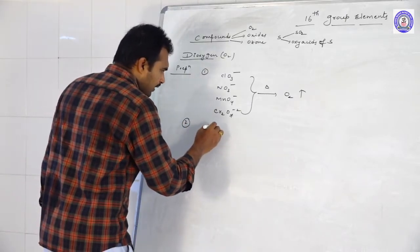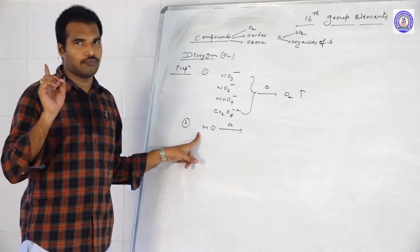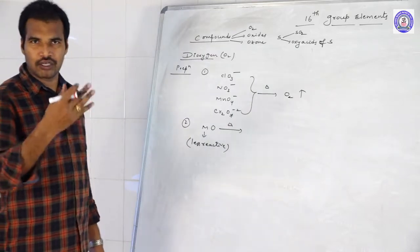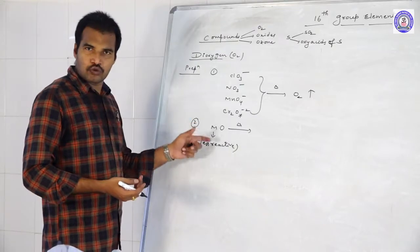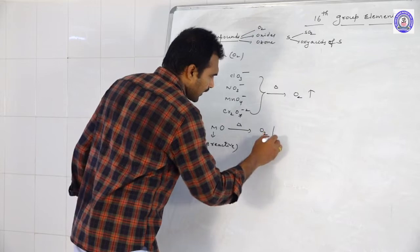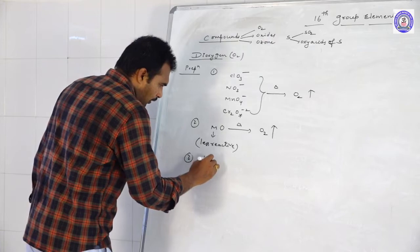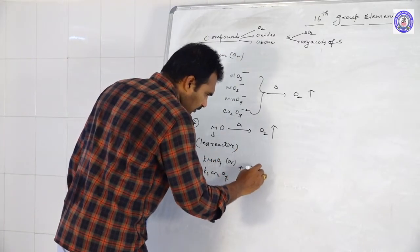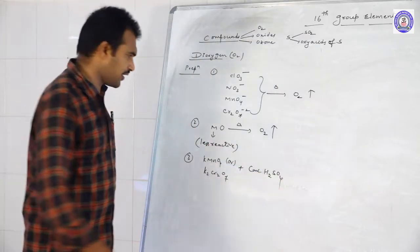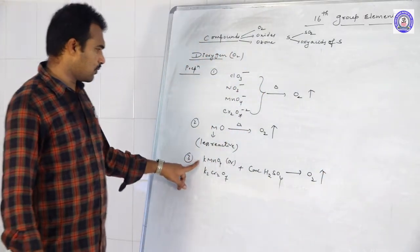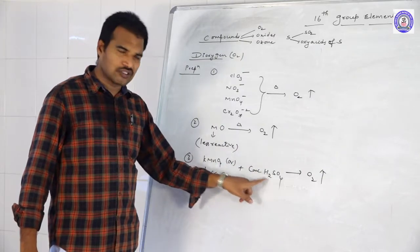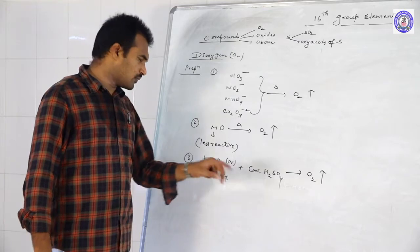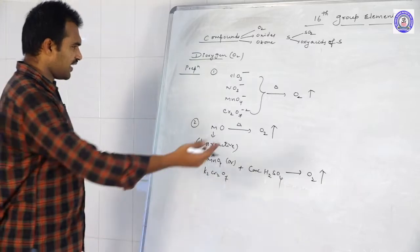The second method: we can prepare Oxygen by thermal decomposition of Metal Oxides. But not all metal oxides — only oxides of less reactive metals in the electrochemical series: Mercury, Silver, Platinum, Gold. By using these less reactive metal oxides on thermal decomposition, we get Oxygen. The third method: when Potassium Permanganate or Potassium Dichromate reacts with concentrated H2SO4, we get Oxygen as one of the byproducts. For example, KMnO4 + H2SO4 gives K2SO4, MnSO4, H2O, and O2. Similarly, K2Cr2O7 gives Chromium Sulfate, Chromium Oxide, H2O, and O2.